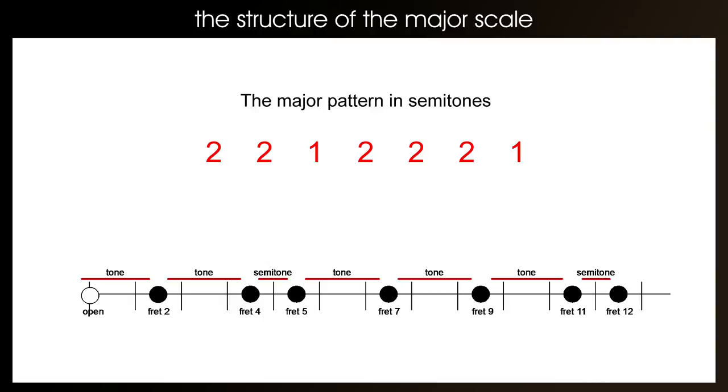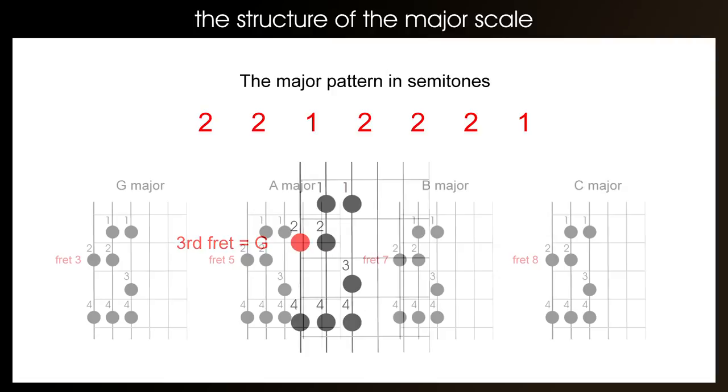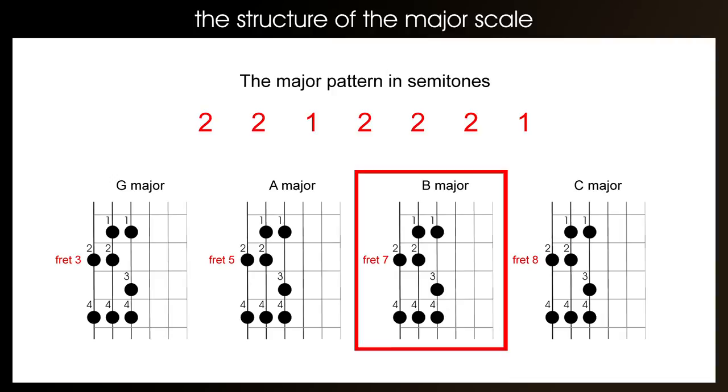The reason this is an E major scale is because the scale gets its name from the first note that's played, which is the root or the tonic. In this case, it was the open E string. So when we played the G scale, we started on the 3rd fret of the bottom E string, which is the G. And this rule will always remain true. So if you played the same pattern in the 5th fret, it would be an A major scale. If you were to play the same pattern in the 7th fret, it would be a B major scale.